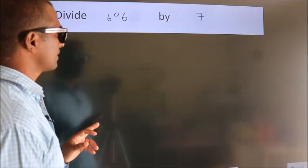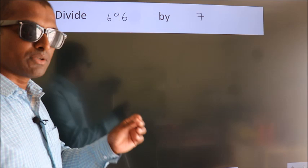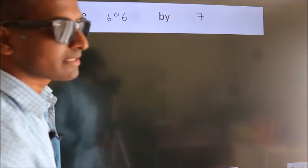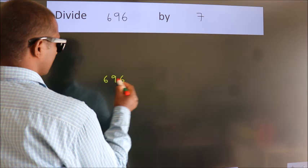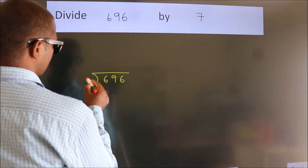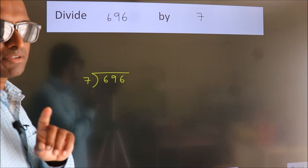Divide 696 by 7. To do this division, we should frame it in this way: 696 here, 7 here. This is your step 1.